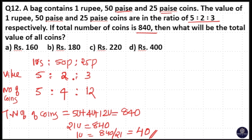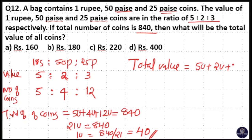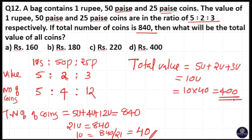Then 5 plus 2 plus 3 — total value is equal to 5 unit plus 2 unit plus 3 unit, that is 10 units. That means 10 into 40 = 400 rupees is the total value. Option B is your answer.